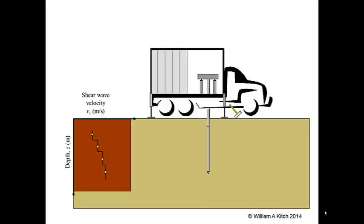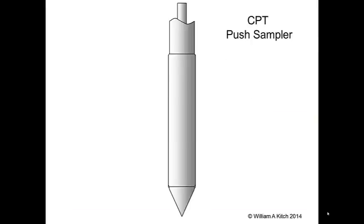One characteristic of the CPT is that it does not take soil samples. At sites where disposal of drilling cuttings is a problem — either because of the location or because the cuttings may be contaminated — this can be an advantage. However, in general, this is a shortcoming of the CPT test. There are ways to mitigate this shortcoming. While the CPT probe itself cannot take soil samples, it is possible to attach a separate sampling device on the standard CPT push rods to retrieve soil samples using the same equipment. Samples are collected using a CPT push sampler, which is approximately the same diameter as the CPT probe but longer.